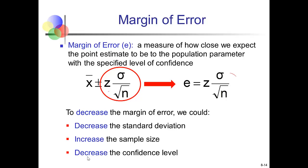The other thing you can do—but shouldn't necessarily do just to decrease the margin of error—is decrease the level of confidence. Decreasing confidence gives a smaller Z-score, which creates a smaller margin of error and a tighter confidence interval. The trade-off is that we now have less certainty about whether that confidence interval truly contains the population parameter.